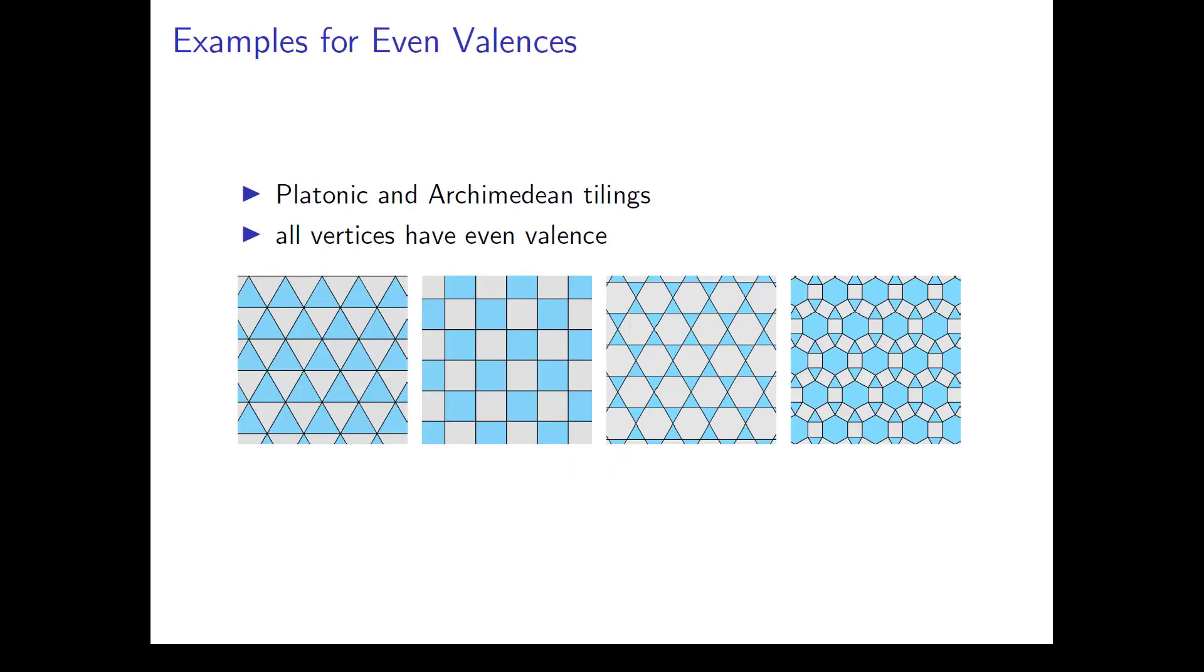Now, let us consider some examples of tilings with even valences only, since this is necessary for a two-coloring of the pattern. The regular or platonic tilings with triangles and squares have valences 6 and 4 at all crossing points. The shown semi-regular or Archimedean tilings with regular triangles and hexagons and with regular triangles, squares and hexagons have valences 4 at all crossing points.